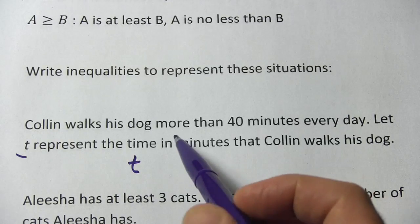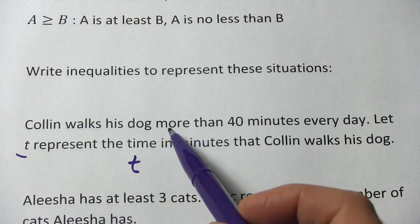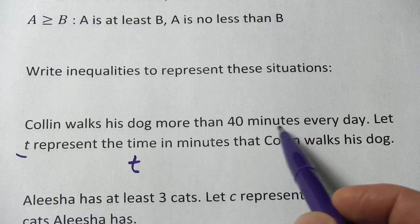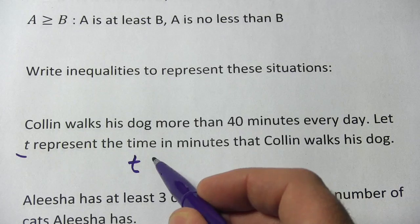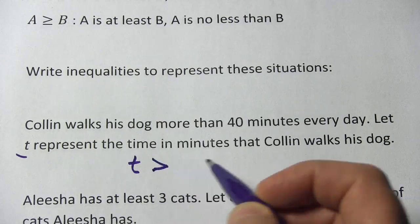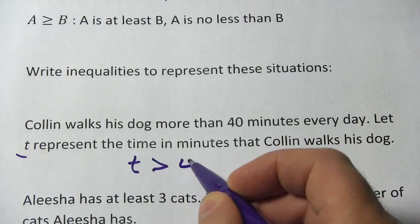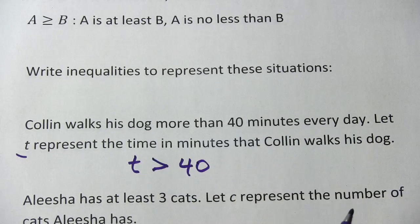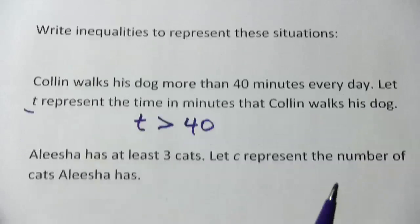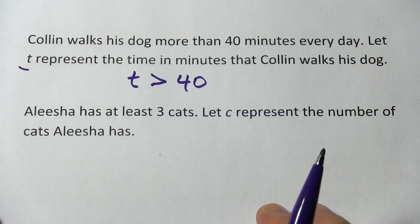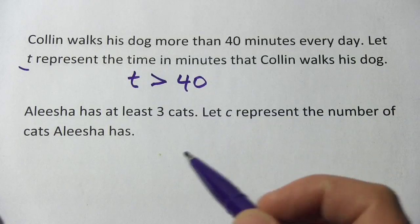T is the time he walks his dog, and that's more than 40 minutes every day, so we're going to have greater than 40. T is greater than 40.